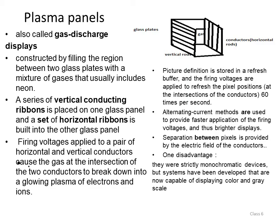Plasma panel is also called gas discharge display. It is constructed using glass plates — the region between two glass plates is filled with a mixture of gas that usually includes neon. A series of vertical conductor ribbons is placed in one glass panel, and a set of horizontal ribbons is built into the other glass panel. A firing voltage is applied at the intersection of the two conductors, causing the gas to break down into a glowing plasma of electrons and ions.